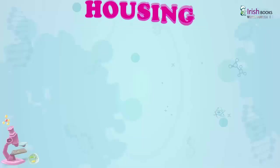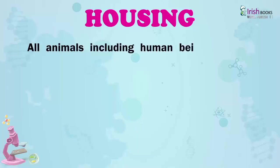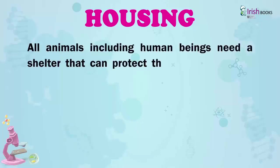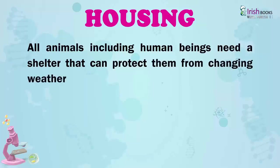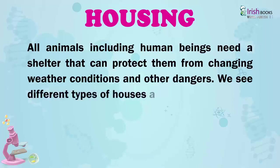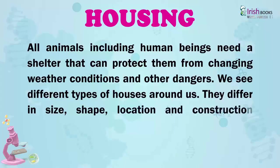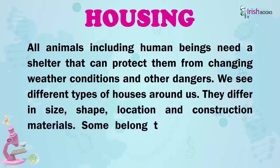Chapter 9: Housing. All animals including human beings need a shelter that can protect them from changing weather conditions and other dangers. We see different types of houses around us. They differ in size, shape, location and construction materials. Some belong to the owner while some are rented by tenants.